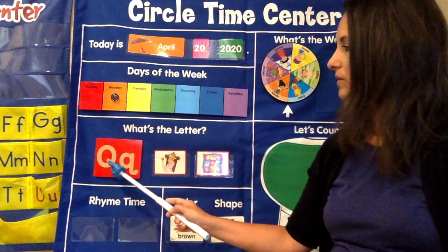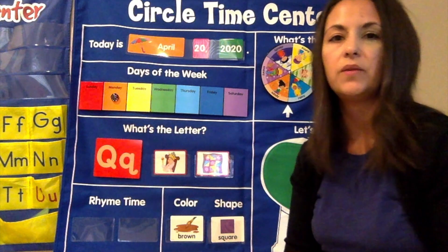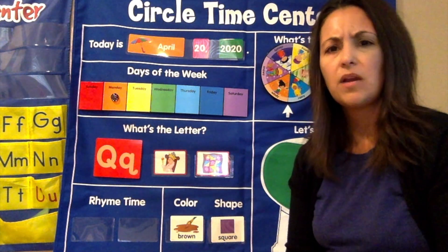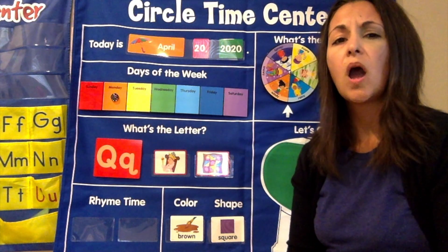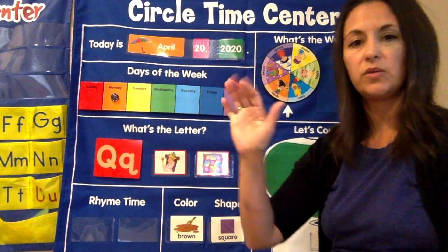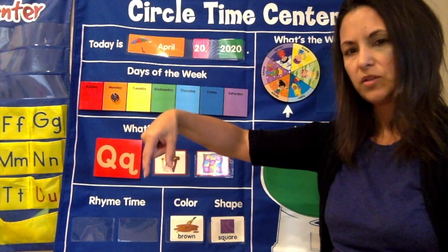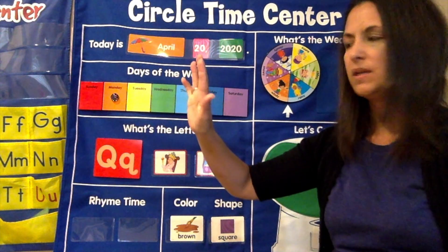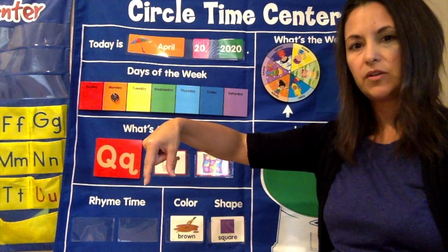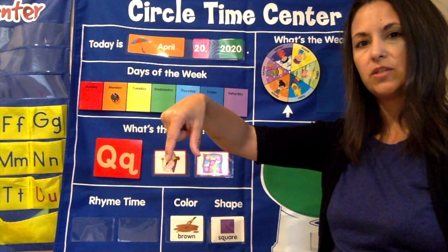It looks like an O with a line in the middle, doesn't it? An O with a line — that's Mr. Q. We're going to learn all about the letter Q this week and do some fun Q activities. What sound does the letter Q make? Does anybody at home know? It's QU. Can you say it with me? QU. And to do the letter Q in sign language, you put your hand up and point to the ground, using your first finger and your thumb pointing down. That is the letter Q in sign language. Q says QU.